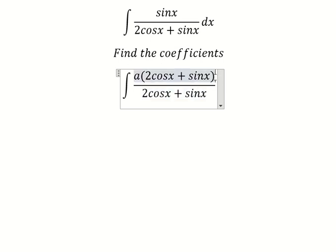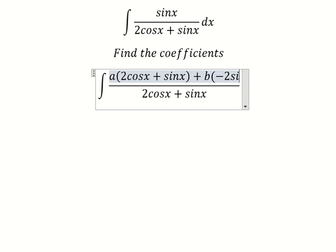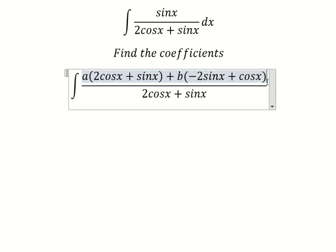Next, coefficient b. We want to use integration by substitution, so we put -2sinx + cosx.